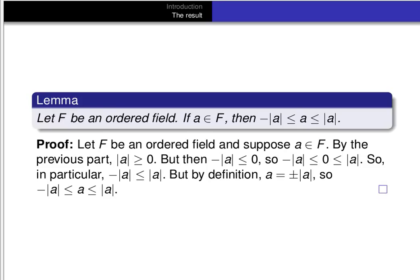In either case the inequality holds. If a equals the absolute value of a, then the inequality on the right is an equality and the statement is true. If a equals minus absolute value of a, then the inequality on the left is an equality and the whole inequality is again true. So minus absolute value of a is less than or equal to a, which is less than or equal to absolute value of a.